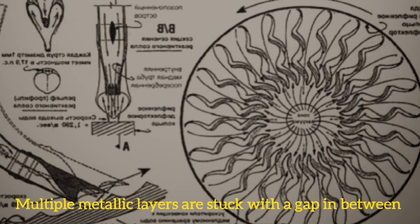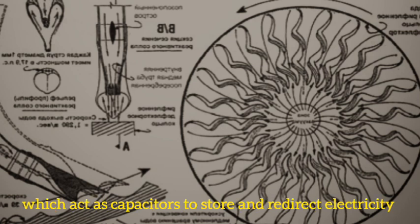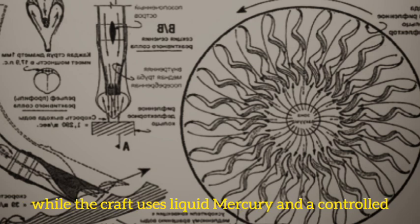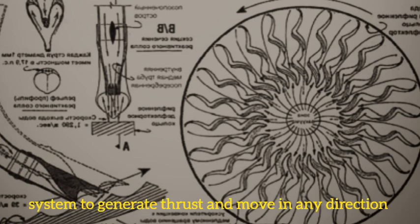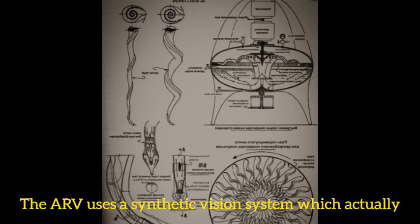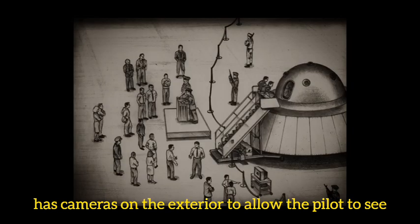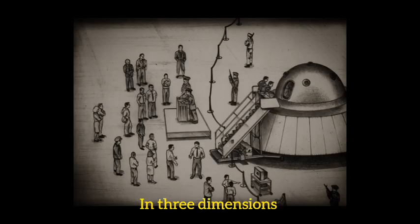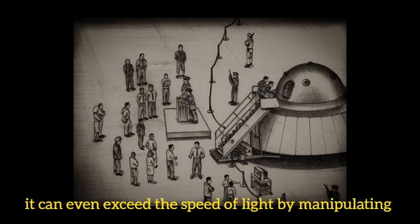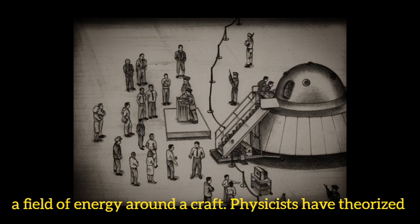Multiple metallic layers are stacked with gaps in between, which act as capacitors to store and redirect electricity, while the craft uses liquid mercury and a control system to generate thrust and move in any direction. The ARV uses a synthetic vision system with cameras on the exterior to allow the pilot to see in three dimensions. It can even exceed the speed of light by manipulating a field of energy around the craft.